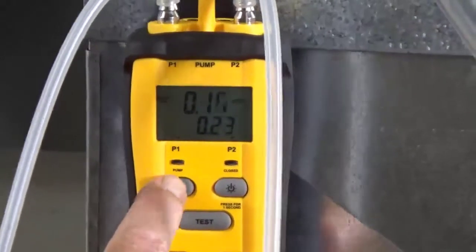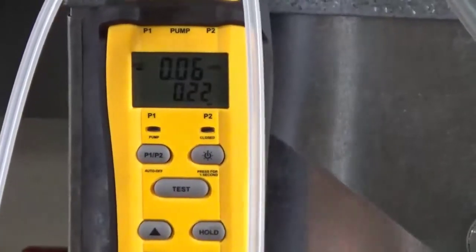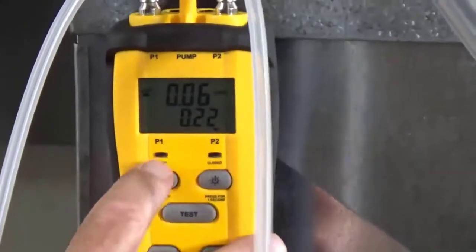If we hit the P1 P2 we can switch it. The 0.06 is our return so there's hardly any static on there. This is still our total.